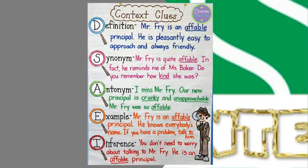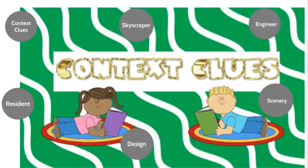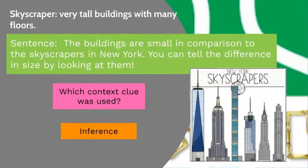Now let's apply our understanding of context clues. Let us first begin with 'skyscraper.' A skyscraper is a very tall building with many floors. If you've been to Dubai or New York, I'm sure you've seen many skyscrapers. Here's a sentence: 'The buildings are small in comparison to the skyscrapers in New York. You can tell the difference in size by looking at them.' I used inferences here — seeing buildings in New York, I can tell they're very tall buildings compared to smaller ones.